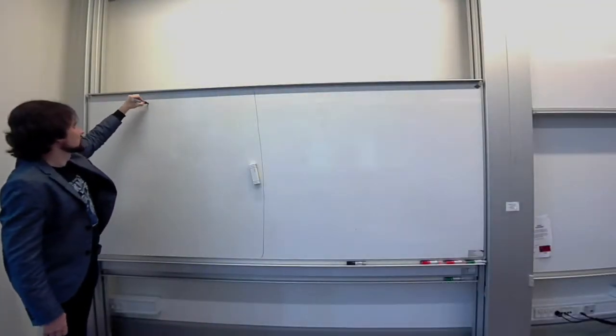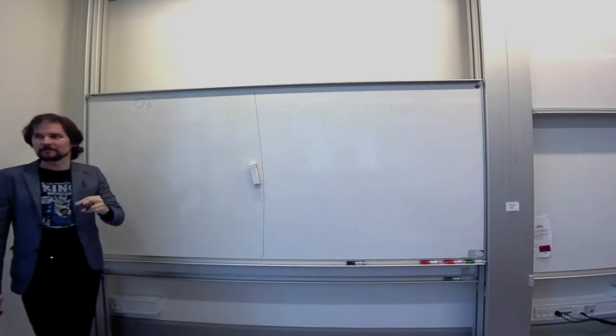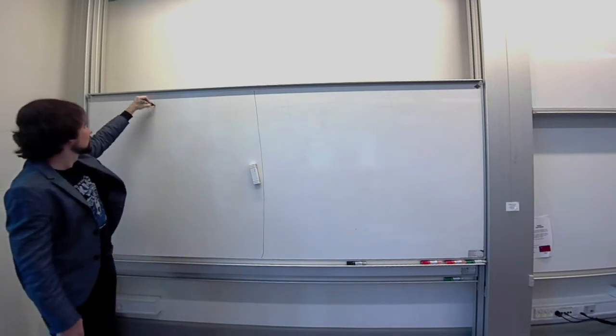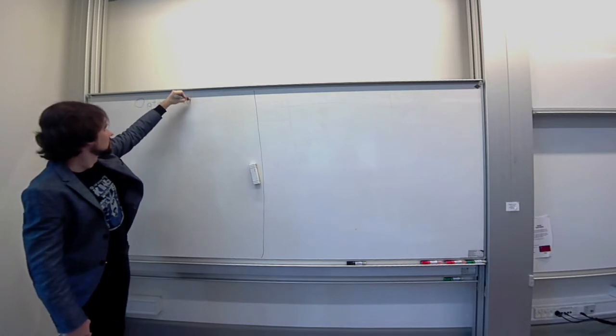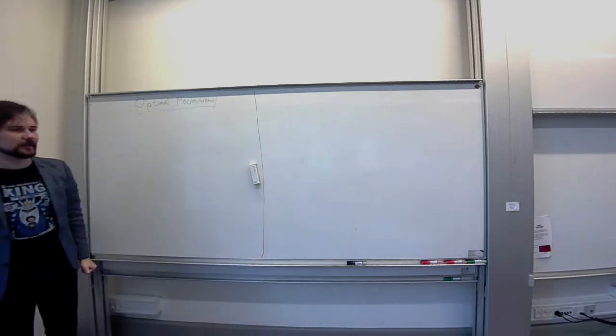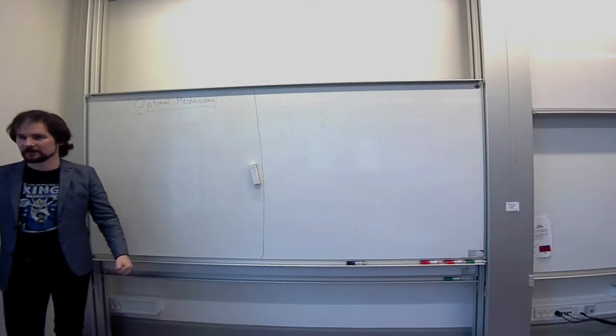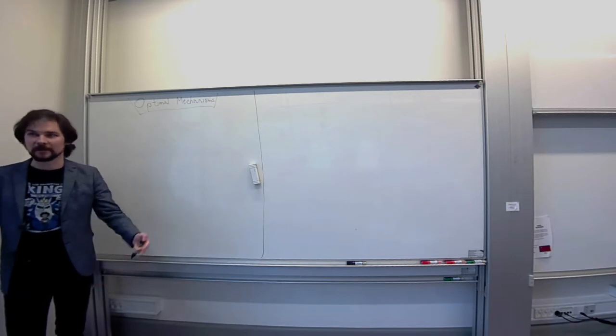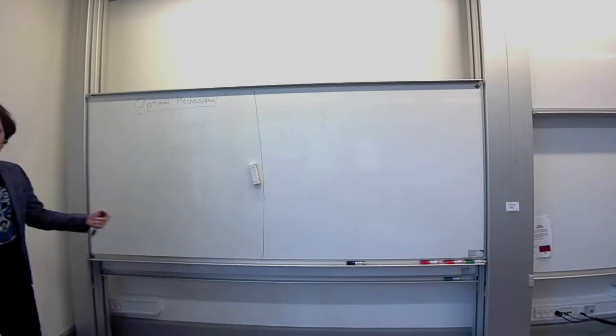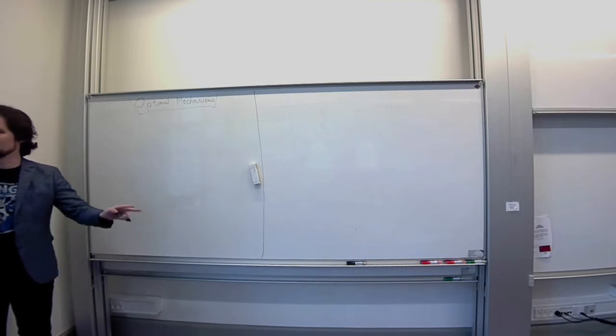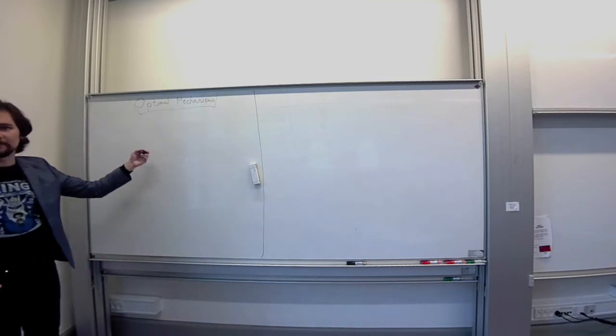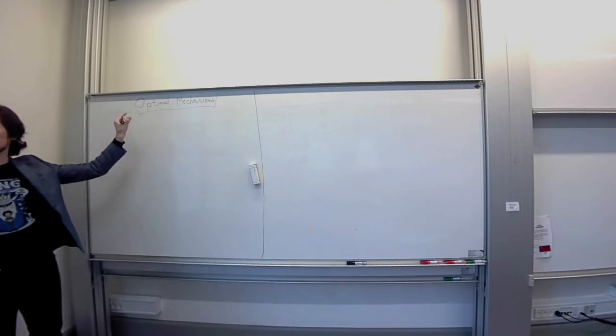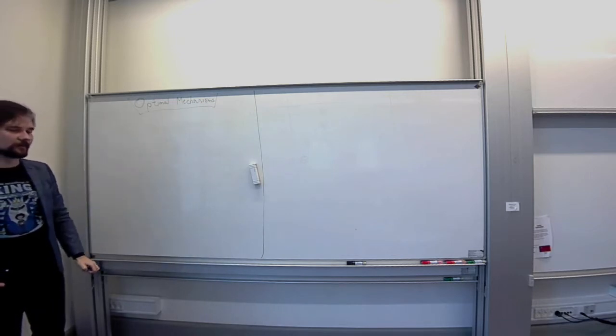The overarching topic of this lecture and the ending of the previous lecture was optimal mechanisms. This is once again just an alias for revenue-maximizing mechanisms, a.k.a. profit-maximizing mechanisms. Whenever I say revenue and profit, these mean the same thing for today. What we did last time is we considered a very simple example of this problem.